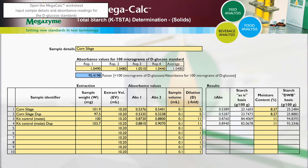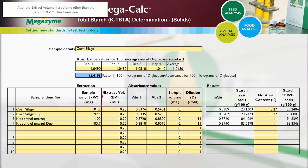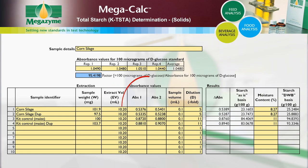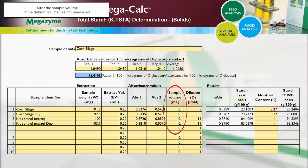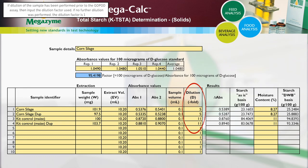Open the MegaCalc worksheet and input the following: sample details; absorbance readings for the glucose standards; for each sample, input the sample identifier; for each sample, input the sample weight used. Alter the extract volume if a volume other than the default 10.2 millilitres has been used. If using the RTS-NaOH method, your extract volume will be 10.4 millilitres. For each sample, input the absorbance values recorded in duplicate. Alter the sample volume if a volume other than the default 0.1 millilitres is used. If dilution of the sample has been performed prior to the GOPOD assay, then input the dilution factor used. If no further dilution was performed, the dilution factor is 1.